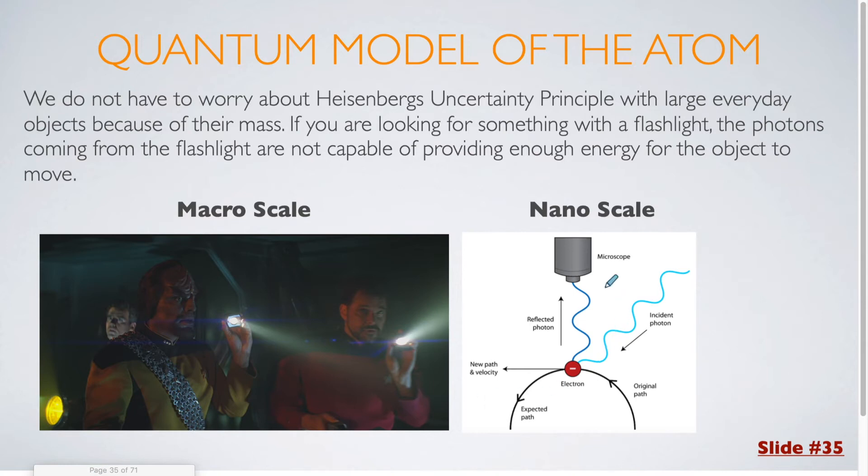Here you can see Heisenberg's uncertainty principle in action. We have the photons coming in and interacting with the electron. The electron was originally on this course right here, but by interacting with the photons, it is now going to have a new path and velocity.